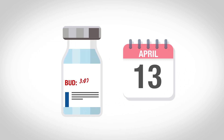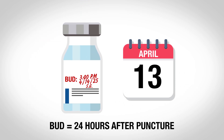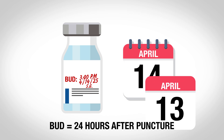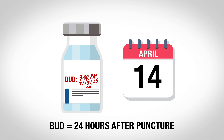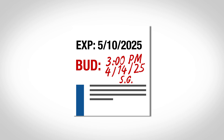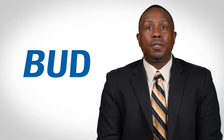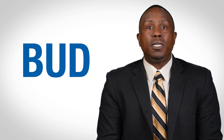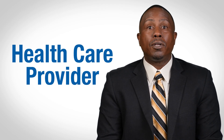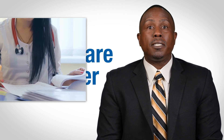For example, once a vial has been punctured, its beyond use date may be 24 hours after puncture, even though its expiration date may be a month away. Unlike the expiration date, which is determined by the manufacturer, the BUD is determined by the health care provider using guidance included in the vaccine's package insert or fact sheet.